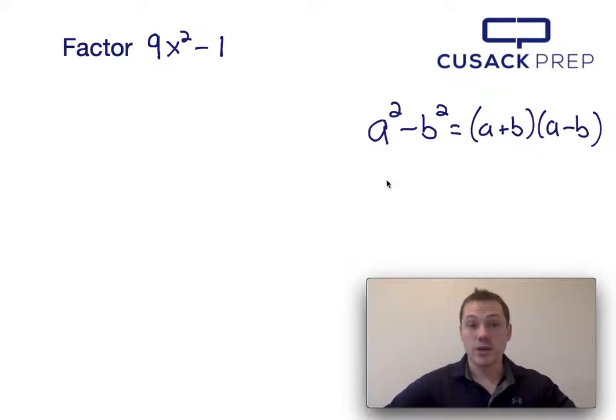Now the first thing I notice is both 9x squared and 1 are perfect squares, and since we're taking the difference of two perfect squares, I know that this can be factored using the difference of squares equation, which I've presented over here on the right-hand side.